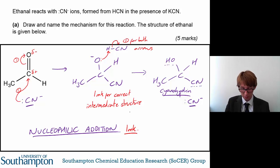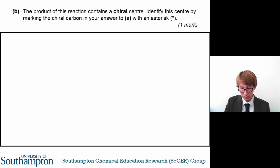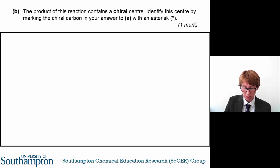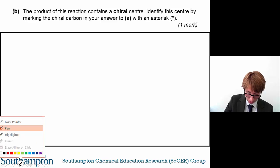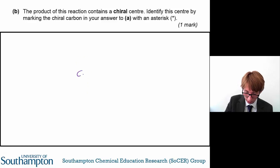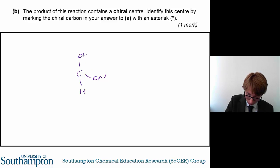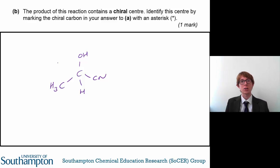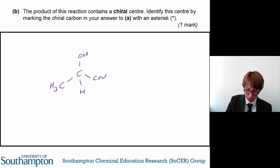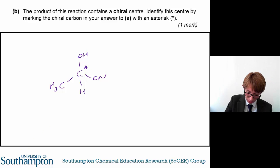That's your five marks for this part of the question. The next part asks: the product of this reaction contains a chiral centre — identify it by marking the chiral carbon with an asterisk. To do this you need to understand the definition of the word chiral. A chiral carbon is one that is attached to four different groups. Looking at the product structure, the central carbon here is attached to four different groups, and therefore it should be marked with an asterisk.